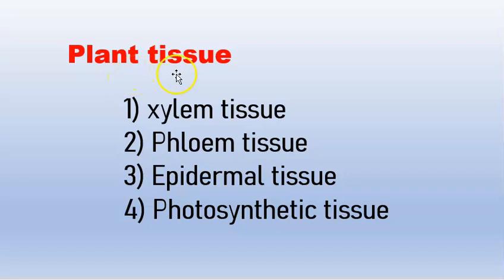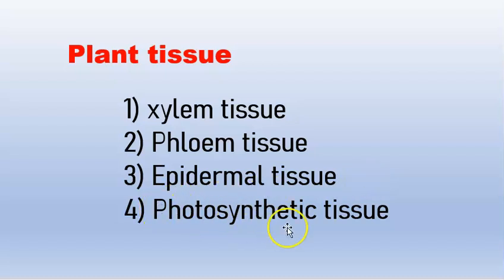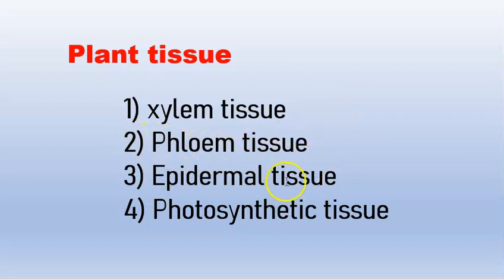There are 4 plant tissues: xylem tissue, phloem tissue, epidermal tissue, and photosynthetic tissue.